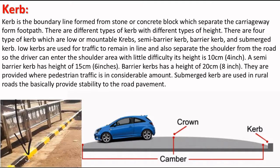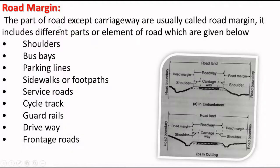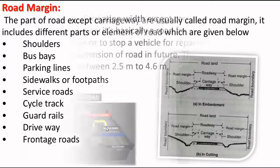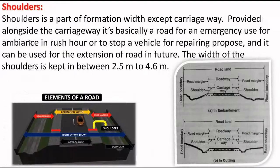The next component is road margin. The part of the road excluding the carriageway is usually called the road margin. It includes different elements such as shoulders, bus bays, parking lanes, sidewalks, service roads, cycle tracks, guardrails, driveways, and frontage roads. First, we study about the shoulder.